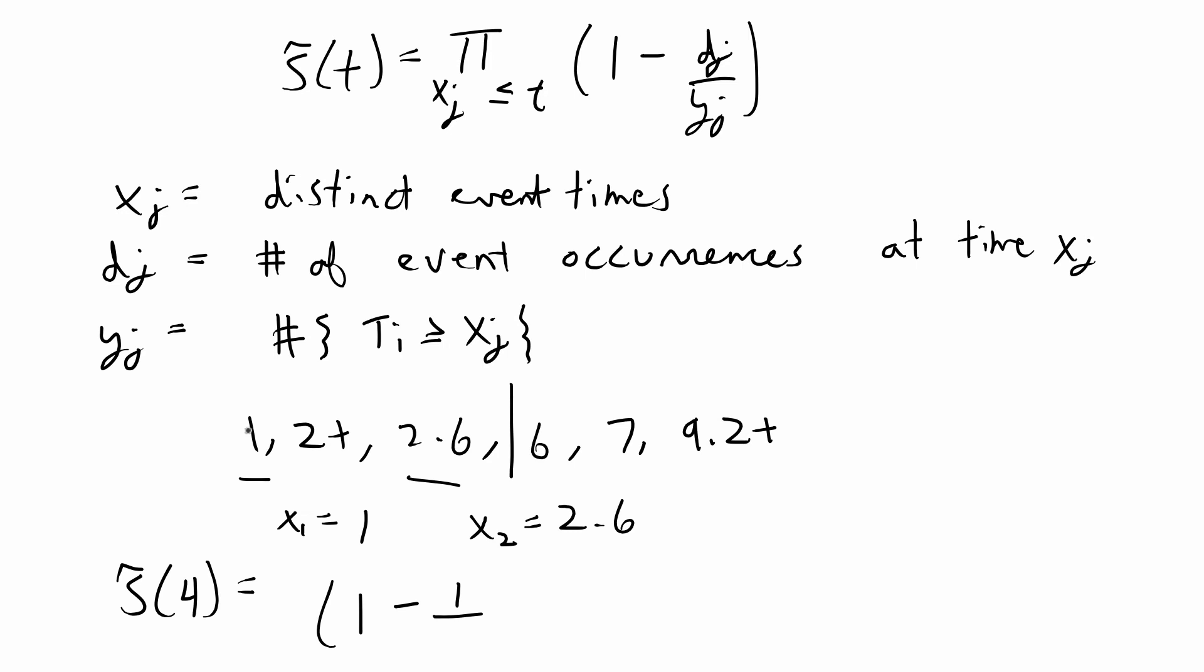At time equals 1 we have 1, 2, 3, 4, 5, 6 follow-up times that are at least as big as x of 1. That gives us our first value for x of 1.